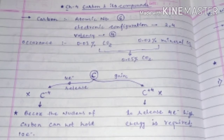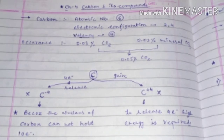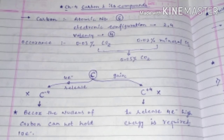Most of the time, carbon shares electrons with another element and forms a covalent bond. This sharing of electrons is known as a covalent bond. If an element shares one electron it forms a single bond, two electrons form a double bond, and if an element shares three electrons it forms a triple bond.